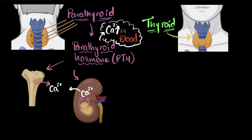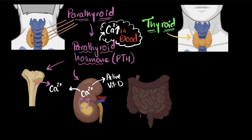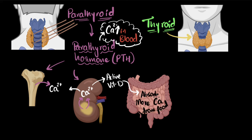But it also has one more effect. It also asks the kidneys to create active vitamin D. It turns out that there's something called active and inactive vitamin D. Active vitamin D, when it goes into the intestine, actually makes the intestine absorb more calcium from the food, and eventually there'll be more calcium in the bloodstream. So PTH doesn't directly act on the intestine, but it does so indirectly. And in all three cases, it has increased the calcium levels in the blood — that's how it ensures calcium levels come back to normal if they were reduced.